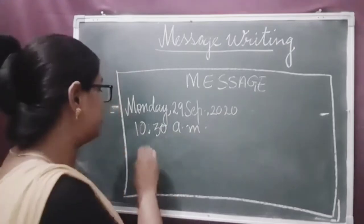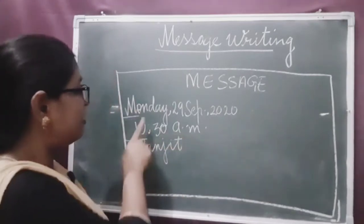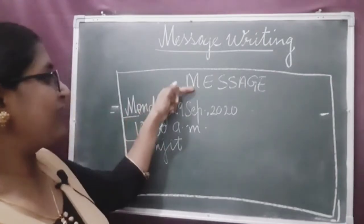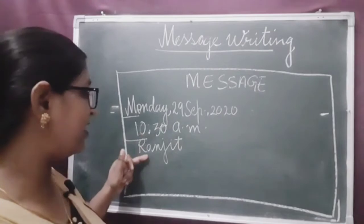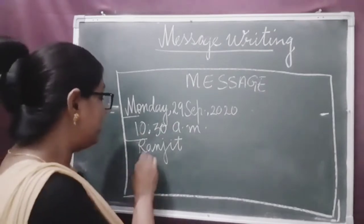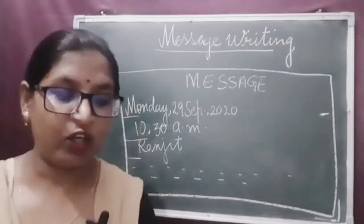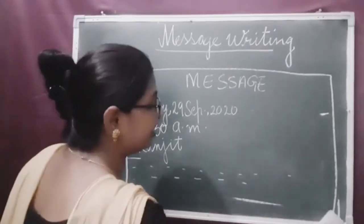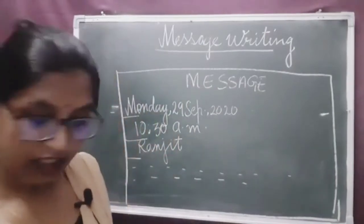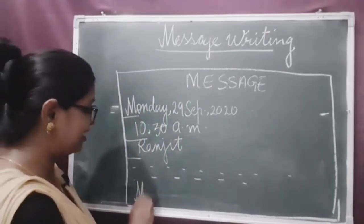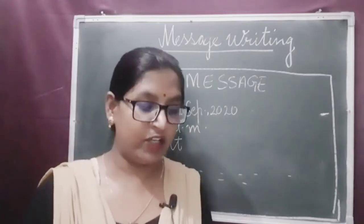Then you should address the person — write the name of the person to whom you are writing the message, suppose Ranjit. Everywhere you should leave one line: after the day and date, after the time, after the person's name. Then comes the body of the message — the main points. After mentioning the body of the message, at last comes the name of the person who is writing the message.